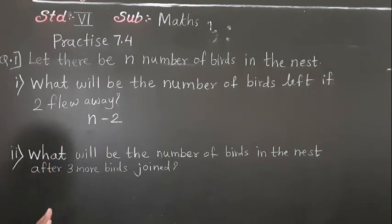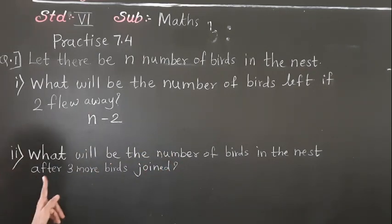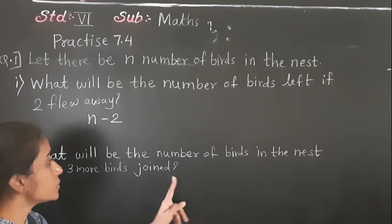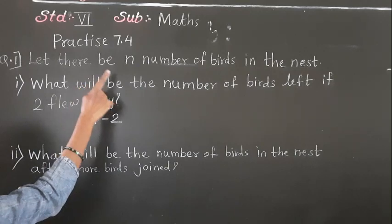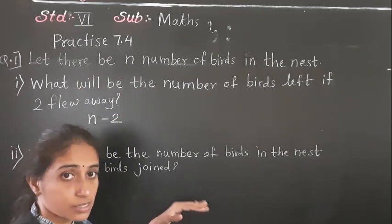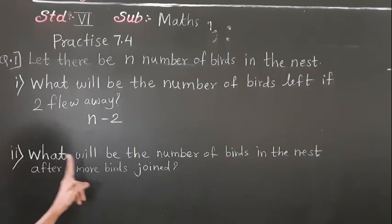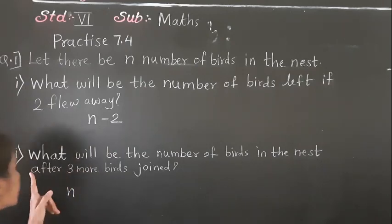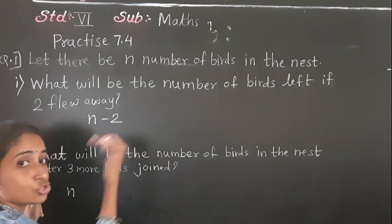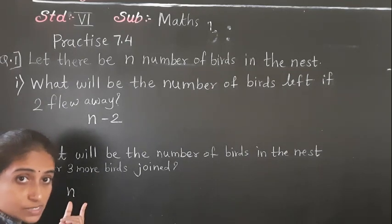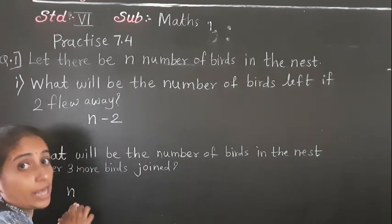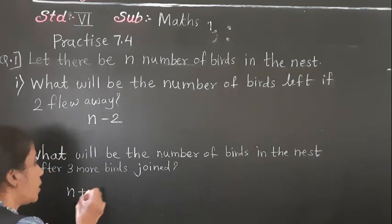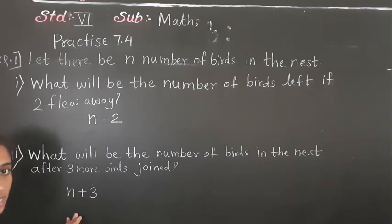Now the next question: what will be the number of birds in the nest after three more birds join? Number of birds in the nest is N. Three more birds join, so N plus 3. The answer is N plus 3.